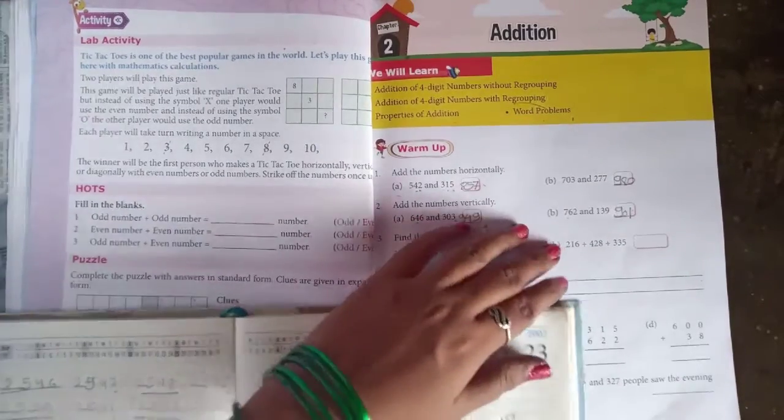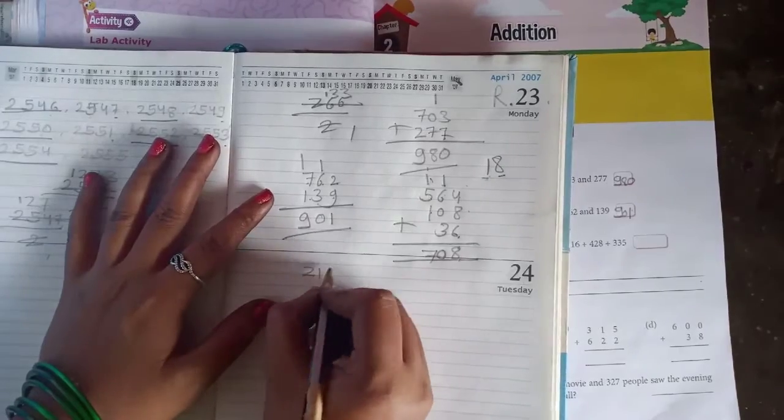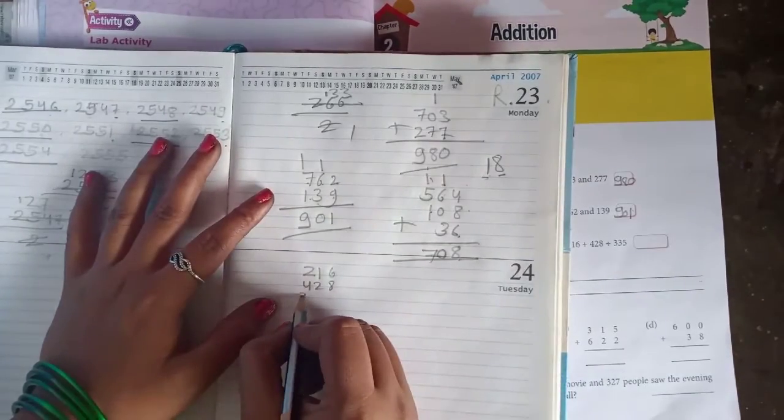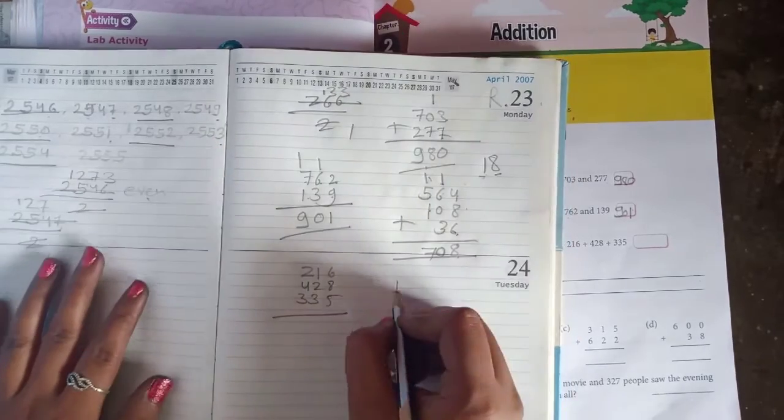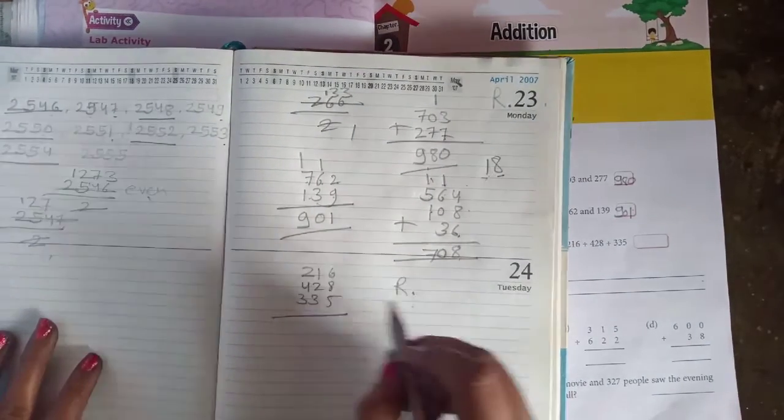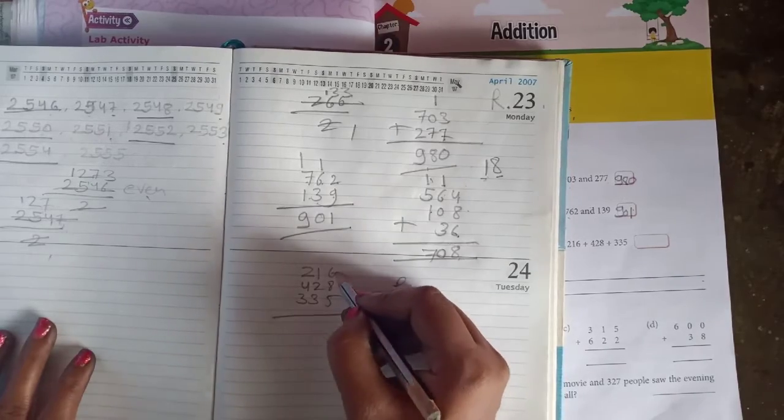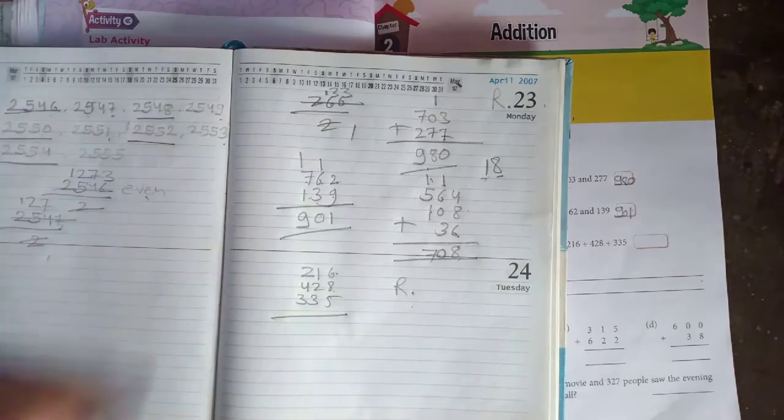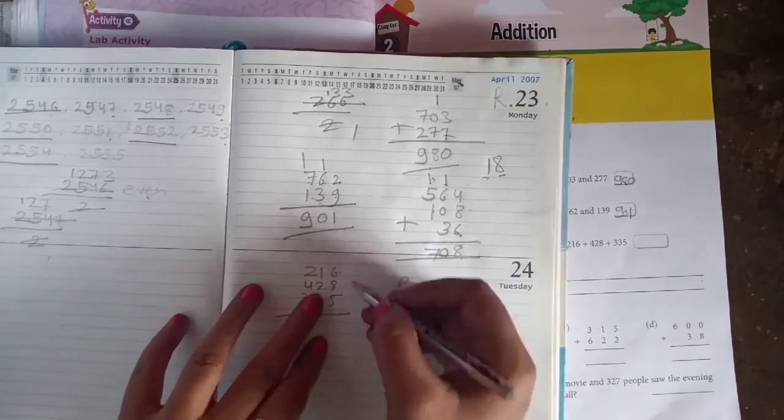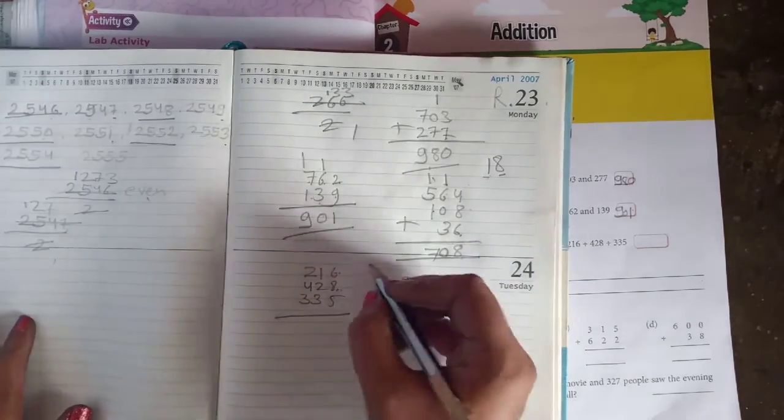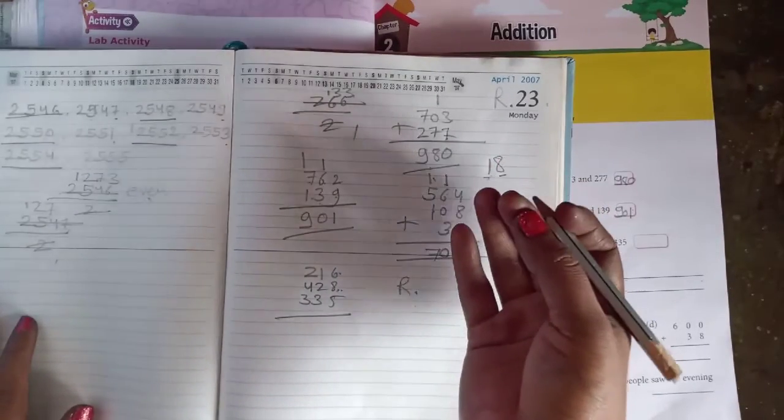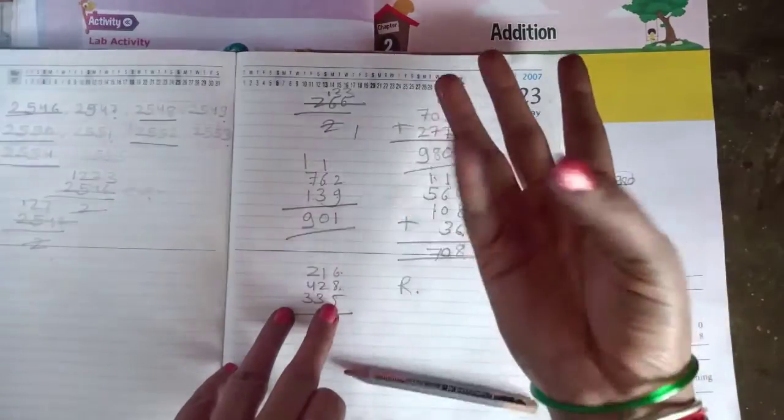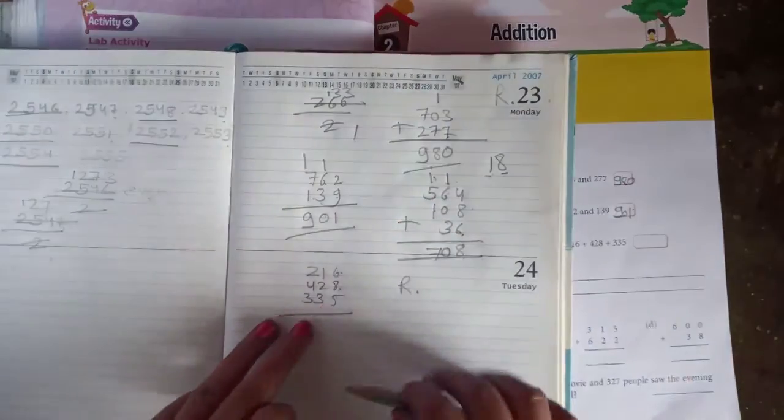As same you can do it like this: 216 plus 428 plus 335. So always doing, we are always counting it by right side now. So count it 6 plus 8, so here 14. 8, 9, 10, 11, 12, 13, 14, 14 plus 5: 15, 16, 17, 18, 19.